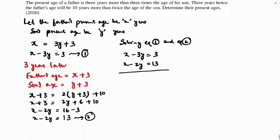Since both equations have the same coefficient for x, we subtract equation 2 from equation 1. Subtracting gives minus 3y plus 2y equals 3 minus 13, so minus y equals minus 10, and therefore y equals 10. The son's age is 10 years.